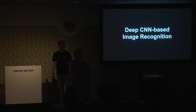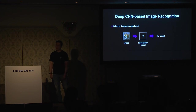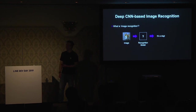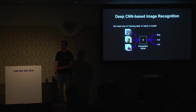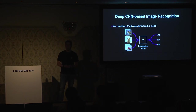Let me first describe what image recognition is. We assume that we have a recognition model which takes an input image and predicts its category label. In this example, the recognition model takes a dog image and its predicted output will be 'dog.' Surely, if we want to make a smart recognition model, then we need lots of training data, which consists of many training images and labels.